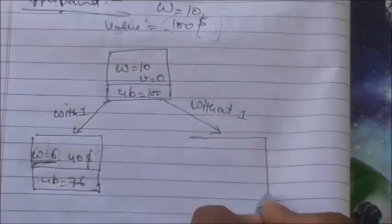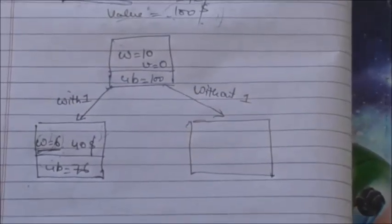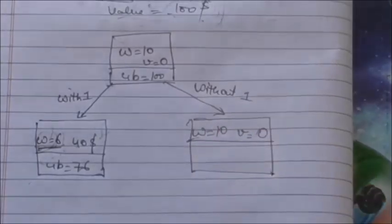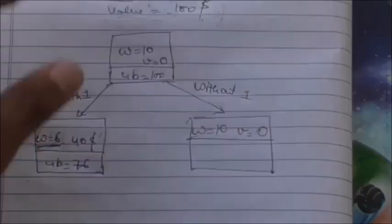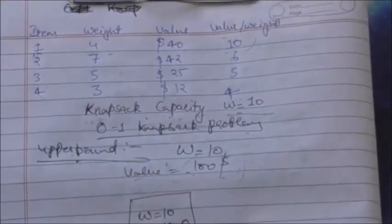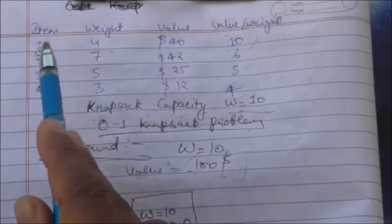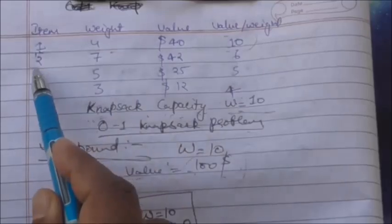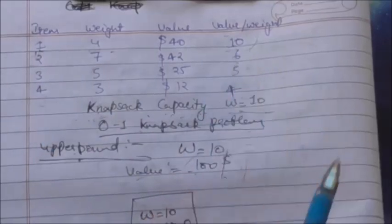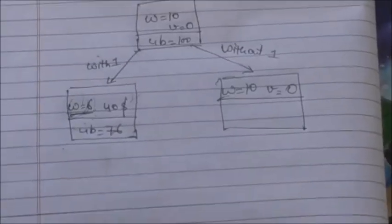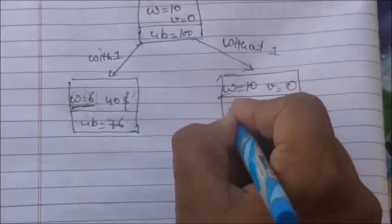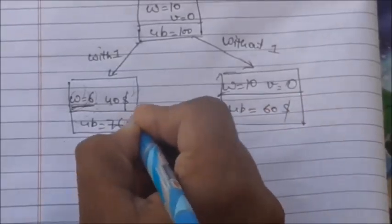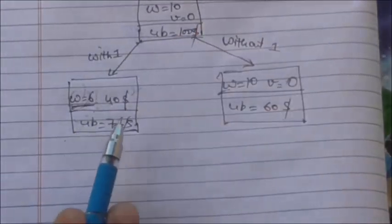If we don't include item one, the capacity remains 10 and value inside is zero. For the upper bound, we assume the knapsack is filled with the most valuable remaining item, which is item number two with a value per weight ratio of six. So upper bound is 10 times 6 equals 60 dollars.